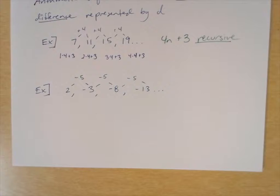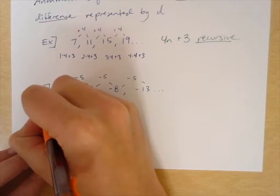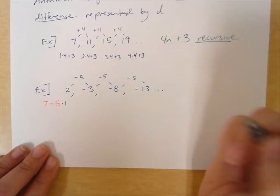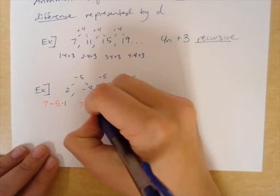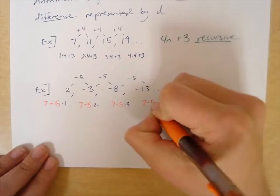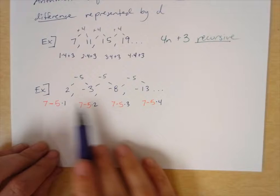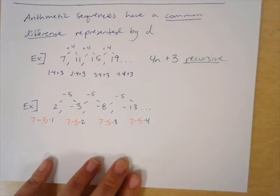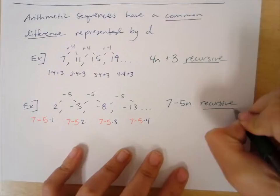We can look at each term and describe it as 7 minus a multiple of 5. So 2 is 7 minus 5 times 1; negative 3 is 7 minus 5 times 2; negative 8 is 7 minus 5 times 3; and negative 13 is 7 minus 5 times 4. We can see those end values 1, 2, 3, and 4 — what's happening is subtracting from 7 and multiplying by 5. Our formula is 7 minus 5n, and again this is a recursive formula.